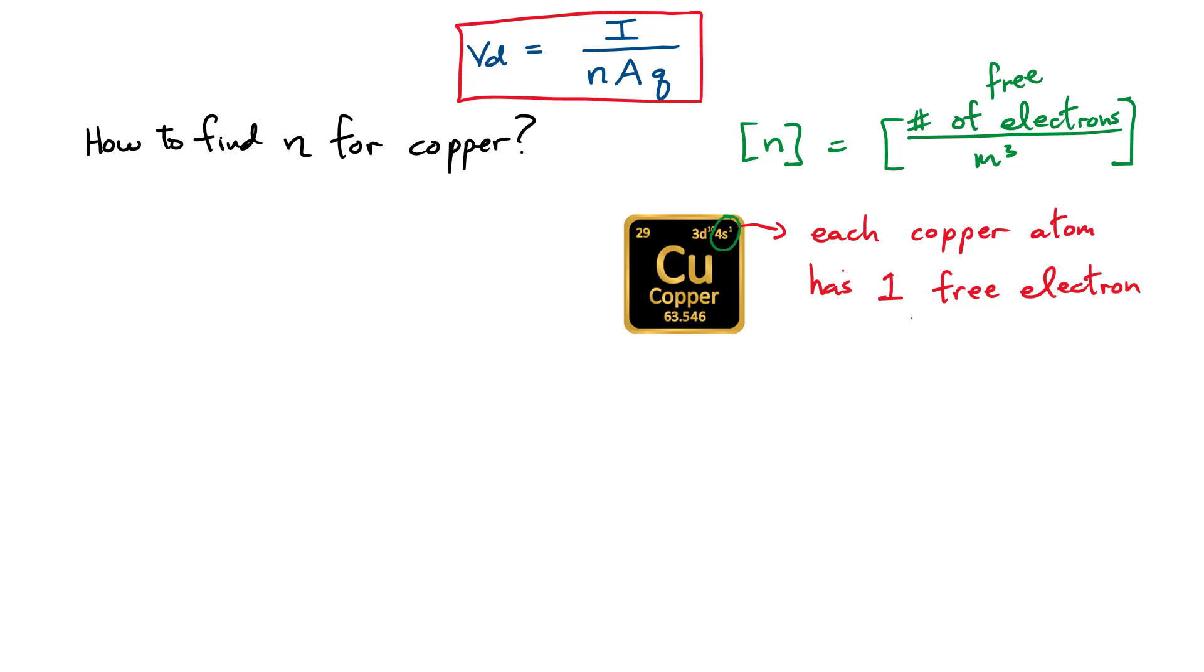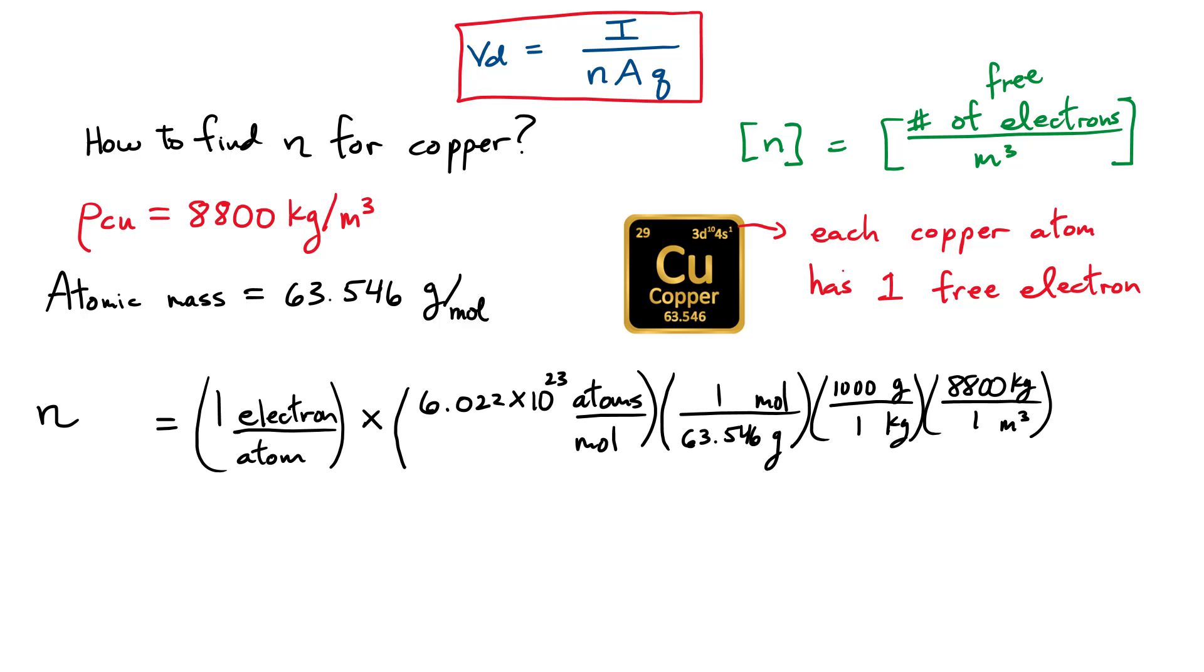In order to do that, you have to look up some other data for copper. For example, we can look up the density of copper. It's approximately 8,800 kilograms per meter cubed. And the atomic mass you can get from the periodic table. That's given down here. And that has units of grams per mole. So now what we have to do is do some dimensional analysis and see how we can put all these numbers together in order to calculate this density of free electrons for copper. And this is how it's done.